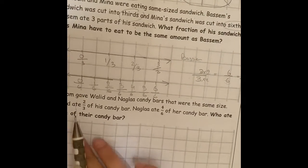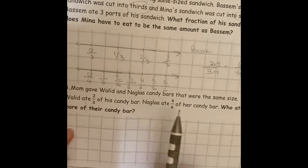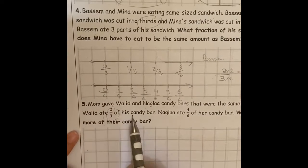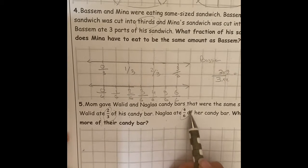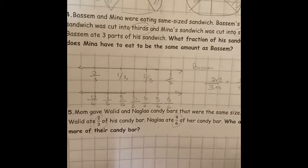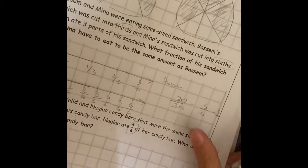The last question, mom gave Waleed and Nagla candy bars that were the same size. Waleed ate 2 over 3 of his candy bar, Nagla ate 4 over 6 of her candy bar. Who ate more of the candy bar? Here he didn't mention a method to solve with, so I'm going to choose stripes.